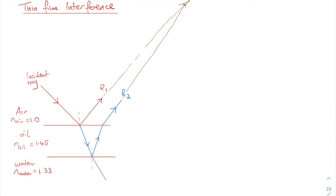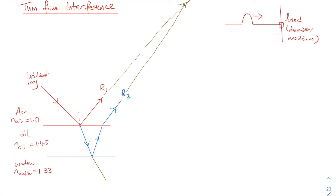At the first boundary, the air-oil boundary, light moves from an optically less dense medium into an optically denser medium. Recall the analogy of a pulse moving towards a fixed end: this fixed end is similar to an optically denser medium. When the pulse reaches the optically denser medium, this fixed end causes the pulse to be flipped back as it returns — a phase change occurs.